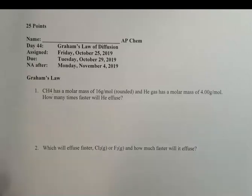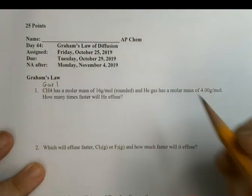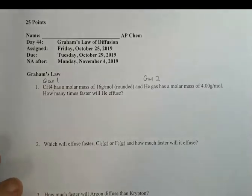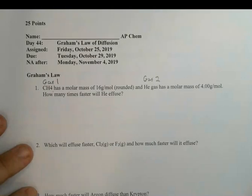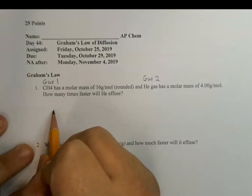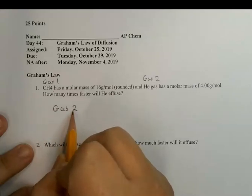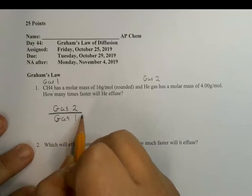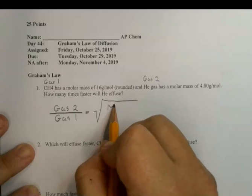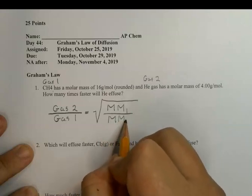We'll call CH4 gas number one and helium gas number two. You want to write this so the answer comes out greater than one, not a decimal less than one. The ratio of gas two over gas one — how much faster it moves — equals the square root of the molar mass of gas one over the molar mass of gas two. That will give us a number greater than one.